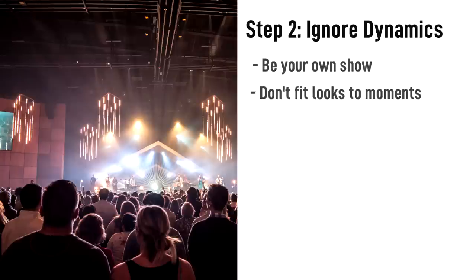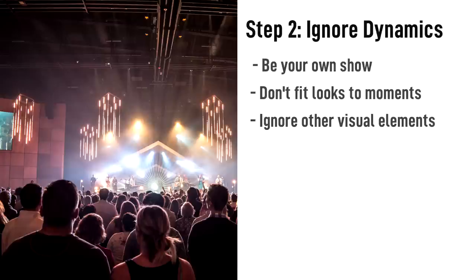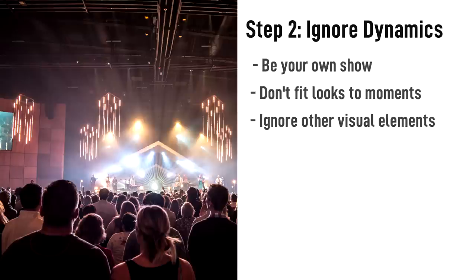Another important thing: if you've got other visual elements happening on stage — say projection or LED walls — make sure they are being integrated into your looks for the song. Just because you may not have direct control over it doesn't mean that when you put a color up on your projection that doesn't match lighting, it doesn't clash. It's still an issue, just something you have to address differently. Keep the same philosophy with consistent color palettes happening with those elements as well.